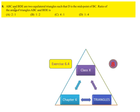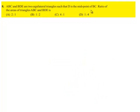Moving on to the 8th question. ABC and BDE are two equilateral triangles such that D is the midpoint of BC. Ratio of the areas of triangle ABC and BDE is.